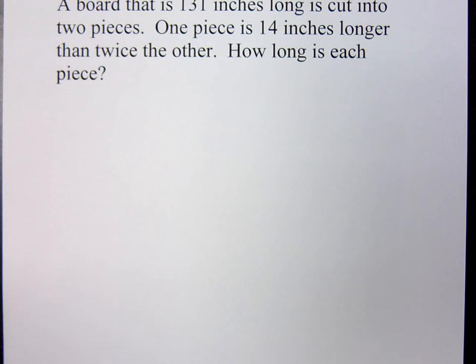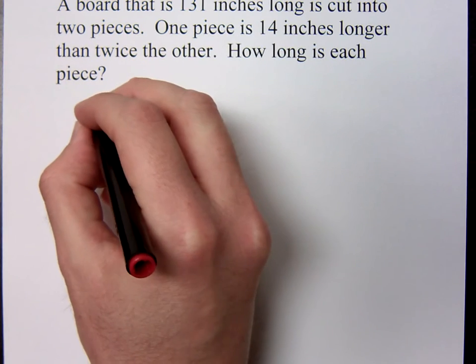In this problem we have a board that is 131 inches long and it's cut into two pieces. And then it says one piece is 14 inches longer than twice the other. This is one of those problems where you might want to actually draw a little bit of a diagram to kind of see what's going on. It will help you understand things a little bit better.